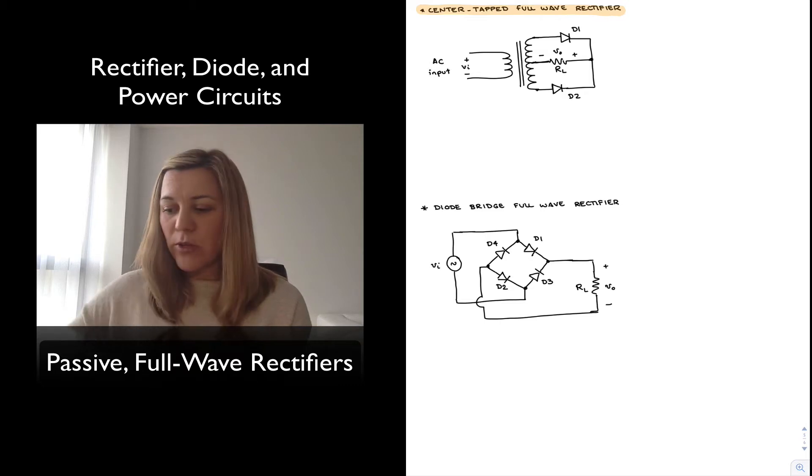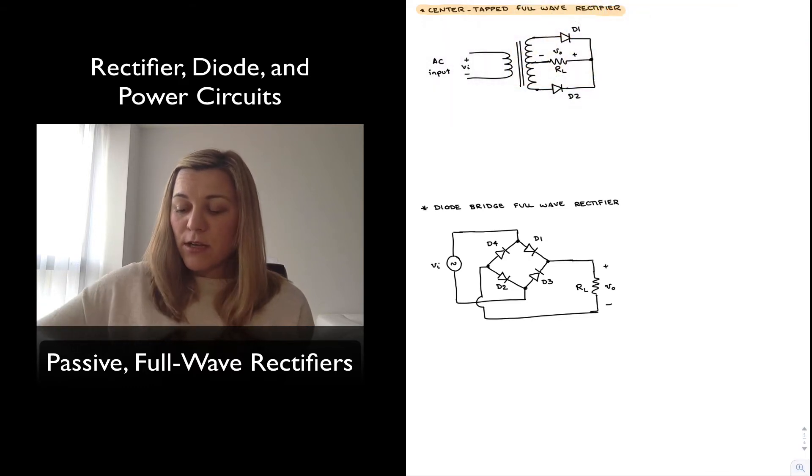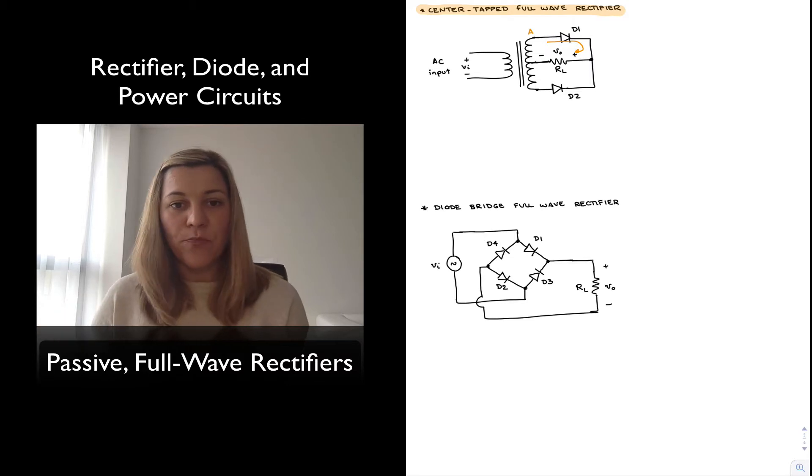We can see that there is a load resistor connected between the cathode of the diodes and the center tap of the transformer. During the positive half cycle of the input signal vin, this point A becomes more positive, diode D1 becomes forward biased, and current flows through D1 and through the load resistor in the direction indicated, so that voltage drop across RL appears as v_out.